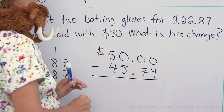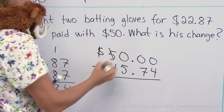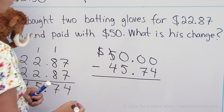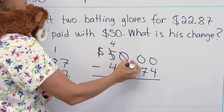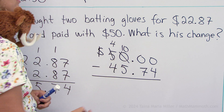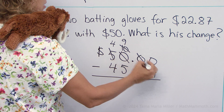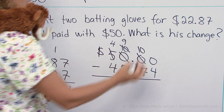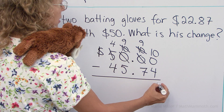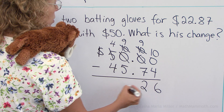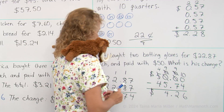So 0 minus 4, you cannot do it. So we go regroup — we need to go all the way to this 5 and leave 4 here, or $40, then $10. And then here we get 10. Then from the 10 we take 1, leaving 9, and over here we get 10. And then again the same thing. Now we can subtract: we get 6, 2, 4 and that's it.